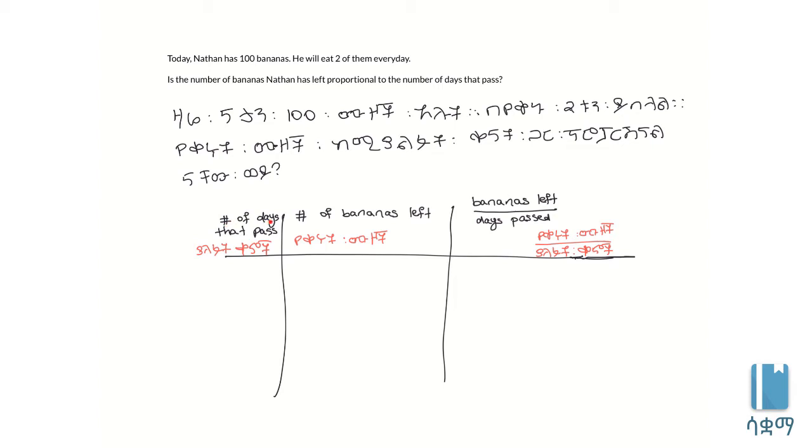The number of days that pass is one variable. The number of bananas left is the other variable - bananas left over days past.